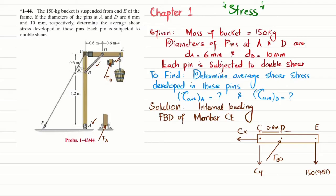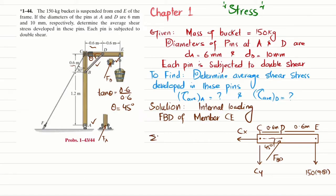From D to E is also 0.6 meter. Taking this angle theta, we get tan(θ) = perpendicular/base = 0.6/0.6, so theta equals 45 degrees. This means F_BD is making an angle of 45 degrees with the horizontal. We'll find F_BD using the equation of equilibrium: the sum of all moments about point C equals zero, taking counterclockwise moment as positive.